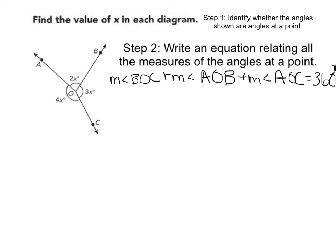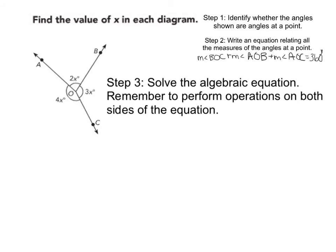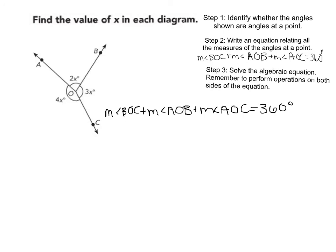So now, step three is to solve the algebraic equation. Remember to perform operations on both sides of the equation. So let's substitute the information we know. The measure of angle BOC is 3x degrees. The measure of angle AOB is 2x degrees.